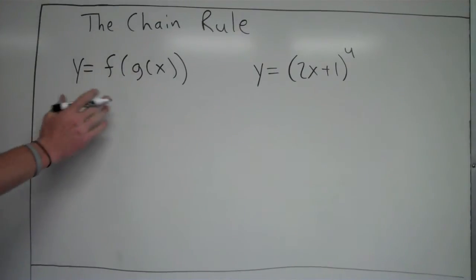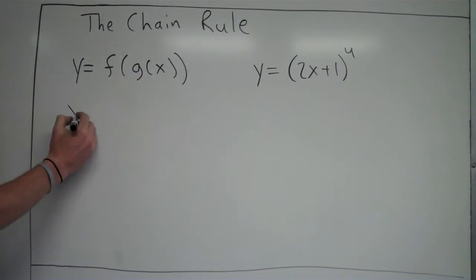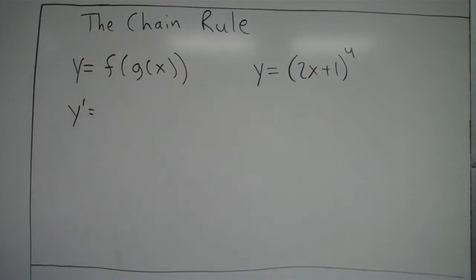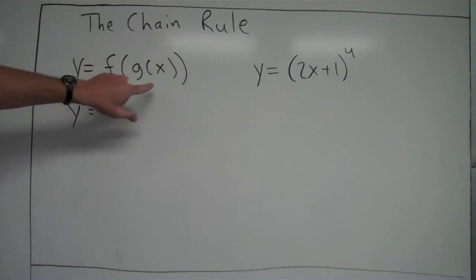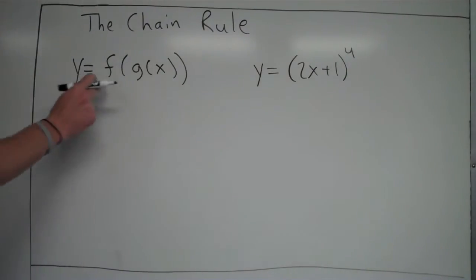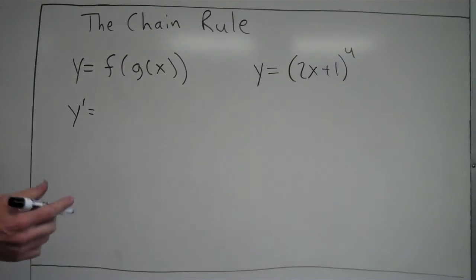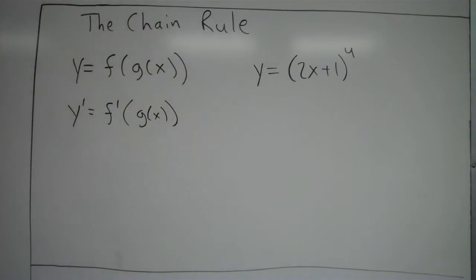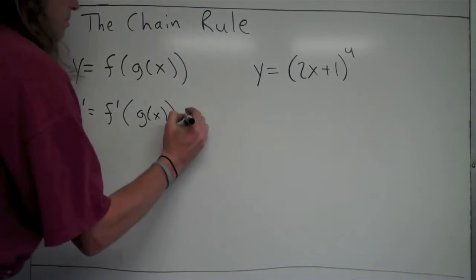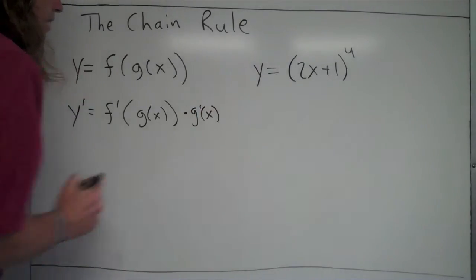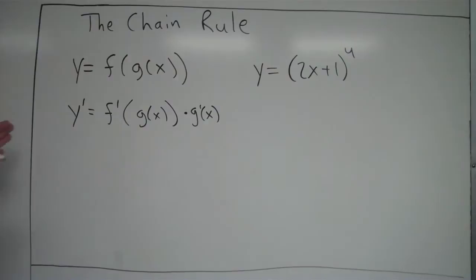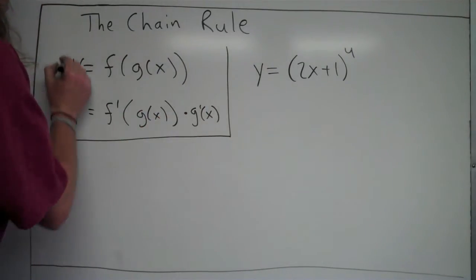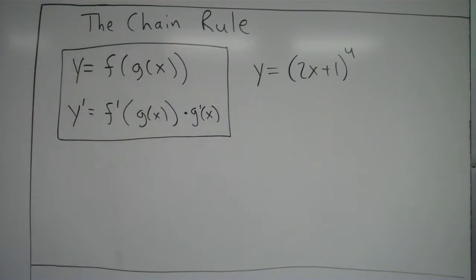The chain rule says you work from the outside first — you work with your outer function and take the derivative of that. So g of x is the function inside of f of x. The first thing we do is work with the outer function f and take the derivative: f prime. Then we keep the inner function the same, so g of x remains the same. The chain rule then says multiply times the derivative of your inner function at the end. That's the general chain rule, and we'll apply it to several examples.